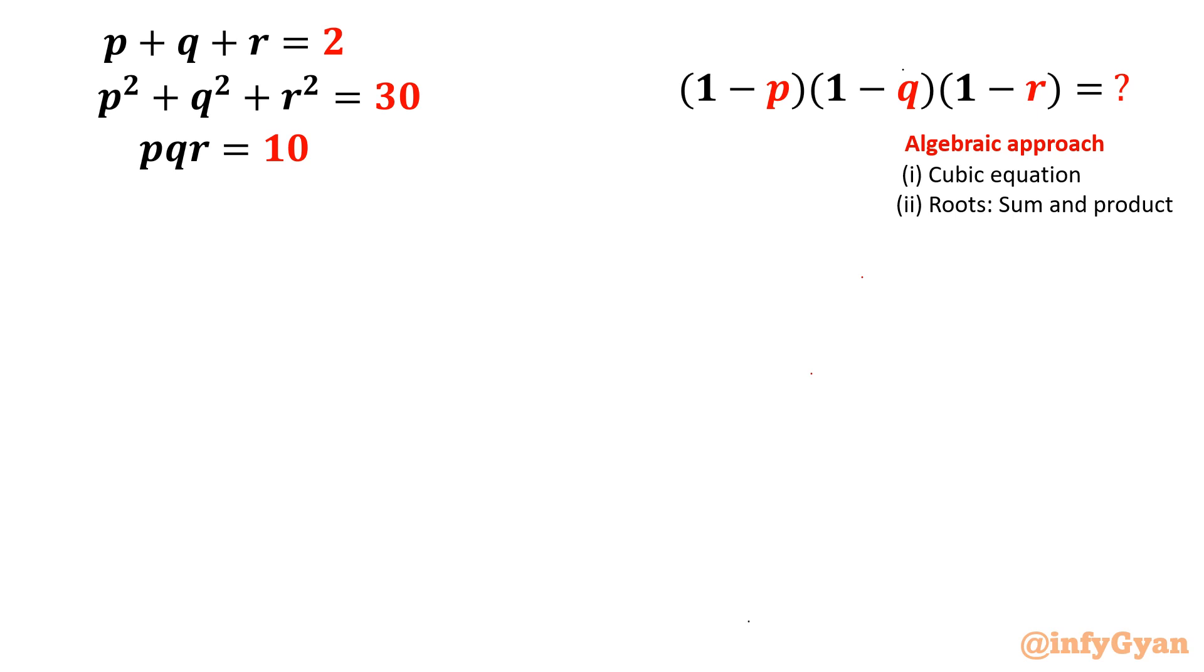I am starting this problem by whole square. Let us call this equation 1, equation 2, equation 3. If I will ask you what is the formula for (a+b+c) whole square, then you will write a square plus b square plus c square plus twice (ab plus bc plus ca). Why I am using this formula?